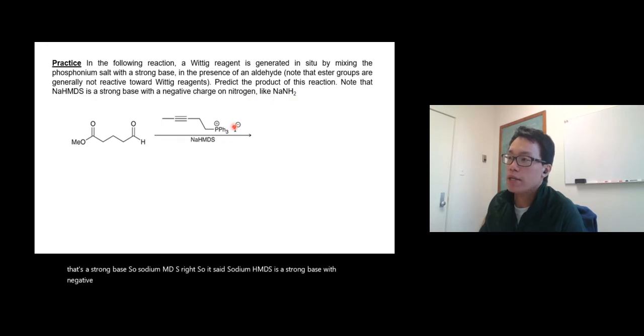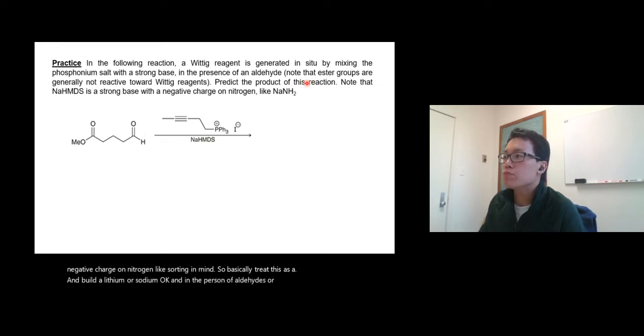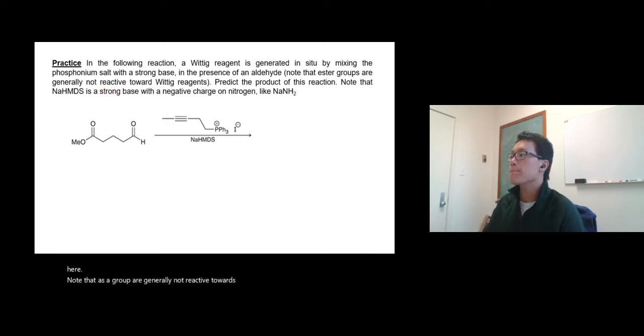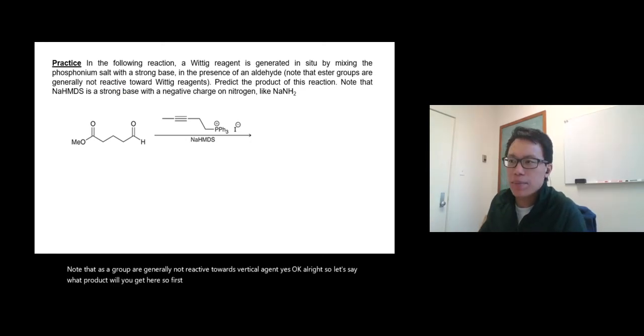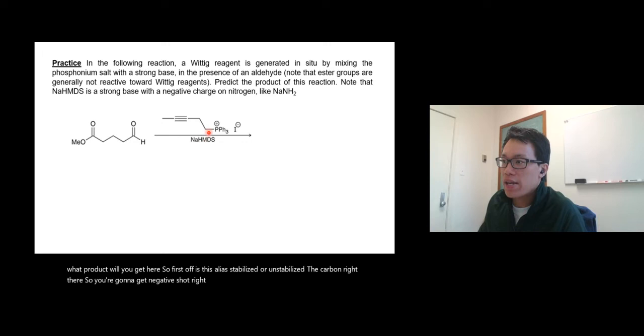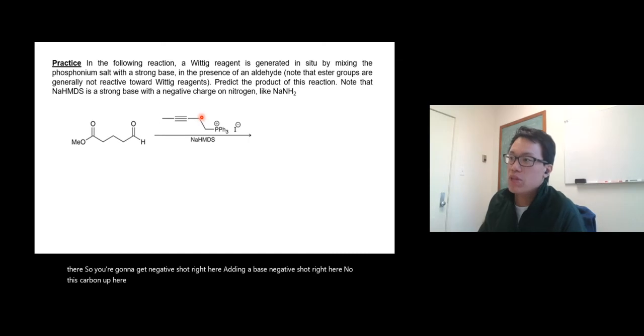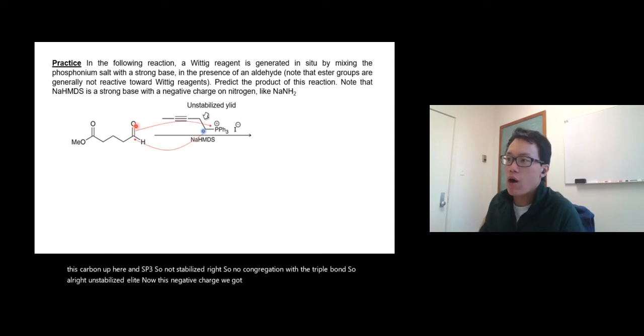So sodium HMDS is a strong base with a negative charge on nitrogen, like sodium amide. So basically treat this as sodium amide, in the presence of aldehyde. So add aldehyde right here. Note that the ester groups are generally not reactive towards Wittig reagent. So first off, is this ylide stabilized or unstabilized? The carbon right there, you're gonna get negative charge right here by adding a base. This carbon up here is sp3, so not stabilized—no conjugation with the triple bond. So this is an unstabilized ylide.